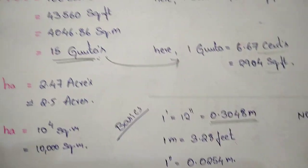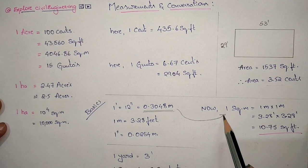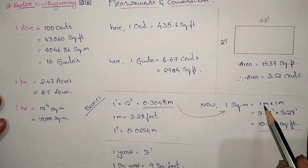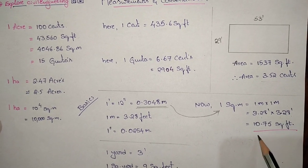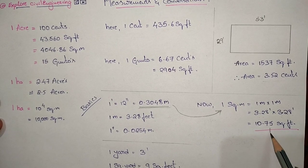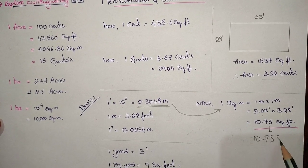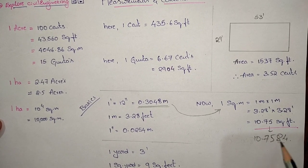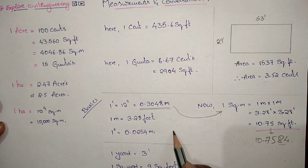One cent equals 435.6 square feet and one gunda equals 2904 square feet. Now, for square meters to square feet conversion: one square meter equals one meter by one meter, that is 3.28 feet by 3.28 feet, which equals 10.75 square feet. The exact value is 10.7584 square feet. So one square meter equals 10.7584 square feet.